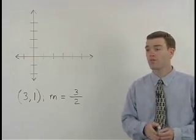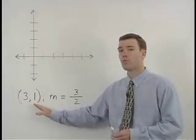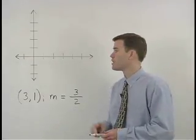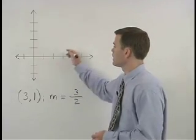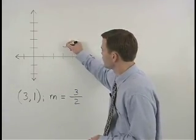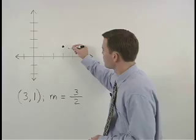We would start things off by plotting our point (3, 1). So we go over 3 and up 1 and call that point A.